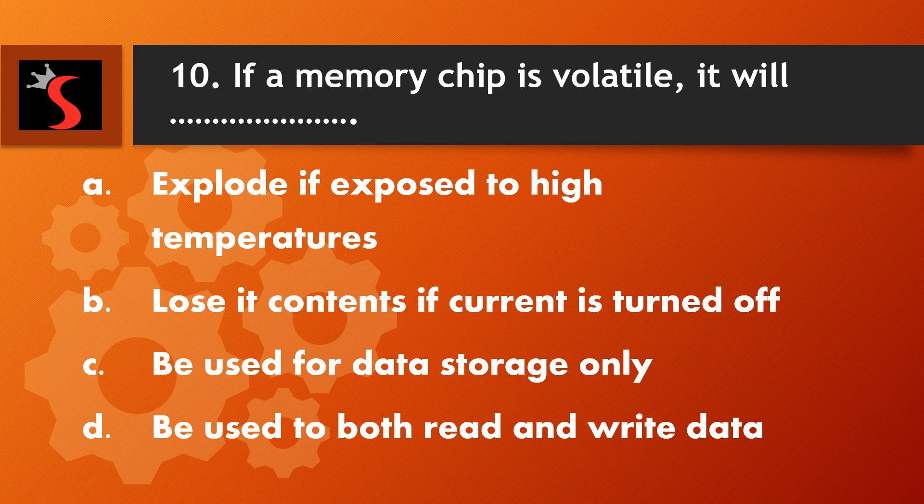The tenth question is: if a memory chip is volatile, it will — A. Explode if exposed to high temperatures, B. Lose its contents if current is turned off, C. Be used for data storage only, D. Be used to both read and write data.